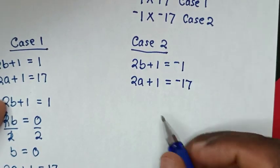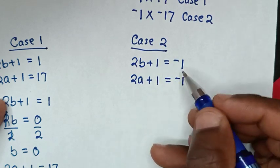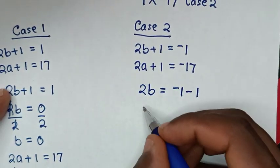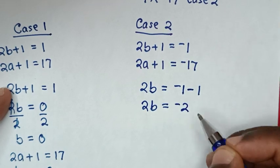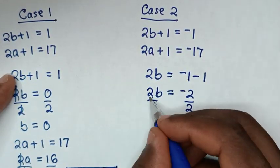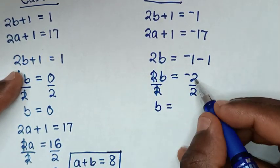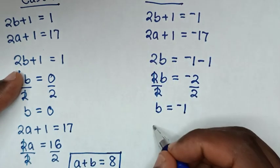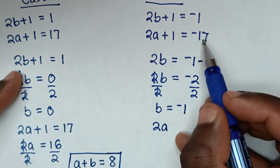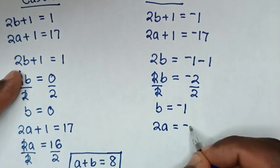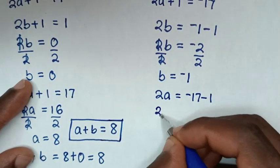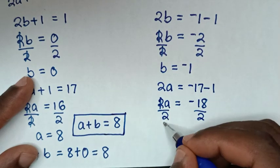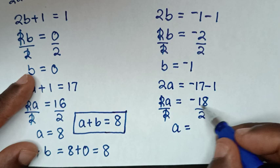Then to solve Case 2, from the first equation 2b + 1 = −1, we take 1 to the other side: 2b = −1 − 1 = −2. Then we divide by 2 on both sides — this and this cancel — so b = −2 ÷ 2 = −1. To find the value of a from the second equation 2a + 1 = −17, we take 1 to the right side: 2a = −17 − 1 = −18. Then we divide by 2 on both sides — this and this cancel — so a = −18 ÷ 2 = −9.